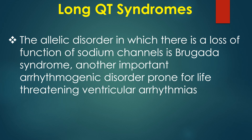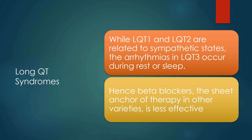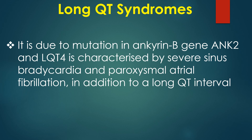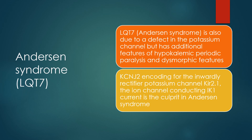Brugada syndrome is another important arrhythmogenic disorder prone to life-threatening ventricular arrhythmias. While LQT1 and LQT2 are related to sympathetic states, arrhythmias in LQT3 occur during rest or sleep — hence beta blockers are less effective. LQT4 is unique: not due to a defect in a cardiac ion channel but in anchoring proteins which anchor ion channels to the plasma membrane or sarcoplasmic reticulum. It is due to mutation in the ankyrin-B gene and is characterized by severe sinus bradycardia and paroxysmal atrial fibrillation. LQT7 or Anderson syndrome is due to a defect in KCNJ2 (inwardly rectifier potassium channel Kir2.1, conducting IK1 current) and has features of hypokalemic periodic paralysis and dysmorphic features.